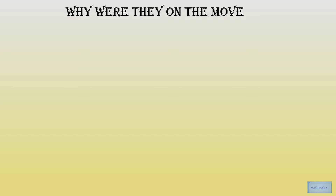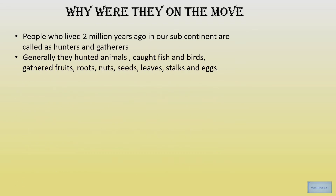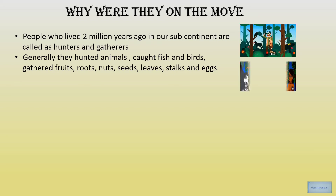People lived 2 million years ago in our subcontinent and these people were mostly hunters and gatherers. Generally they hunted animals, caught fish and birds. They gathered fruits, roots, nuts, seeds, leaves, stalks of plants and eggs of birds to eat. Since they gathered food they were called gatherers, and since they hunted animals and birds they were called hunters.